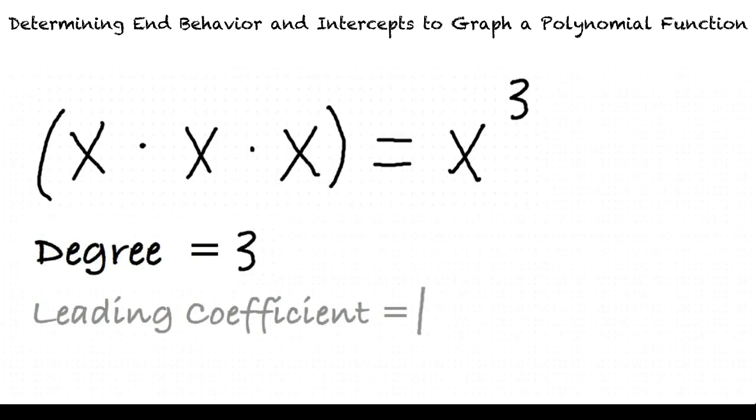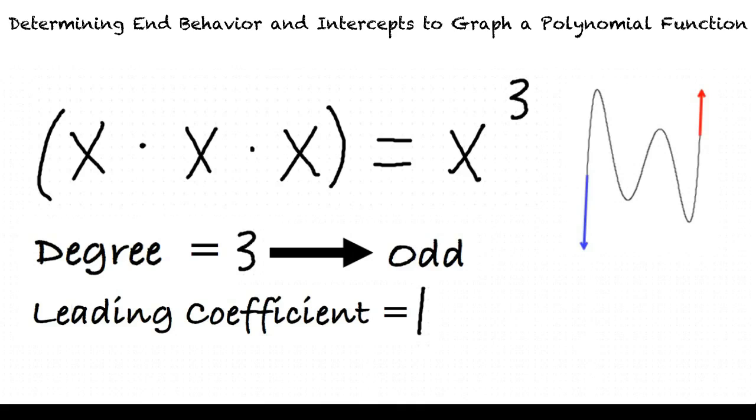But how does this help determine the end behavior of our polynomial function? Good question. When a polynomial has an odd degree, its graph will fall on one side and rise on the other, as opposed to even degree functions, which will either rise or fall on both sides.